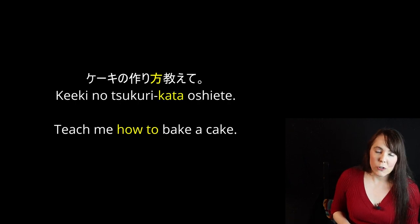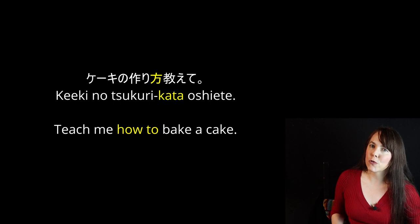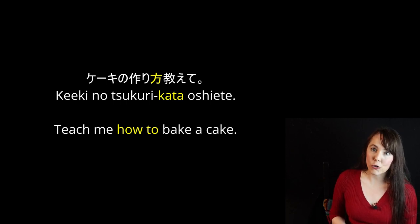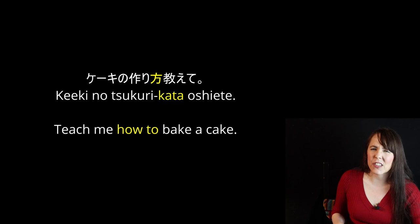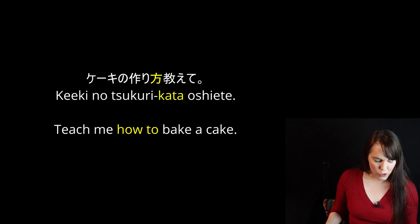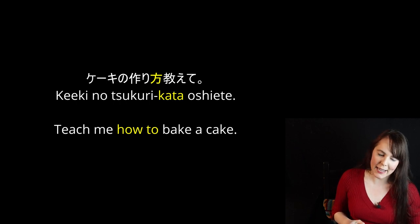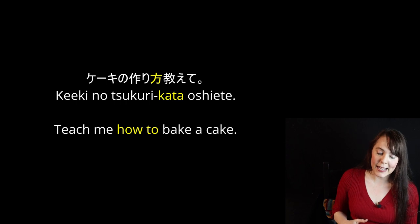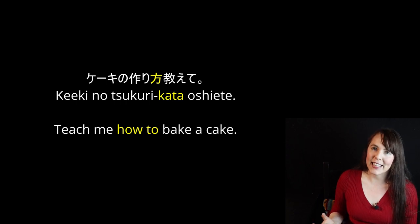'Keki no tsukurikata oshiete.' So tsukurikata — tsukuru is to make, tsukurikata means how to make. In this case, the previous sentences were more 'the way of doing a verb,' but this is more 'how to do a verb.' Keki no tsukurikata — how to make a cake. Oshiete — please teach me, please show me. Teach me how to bake a cake.